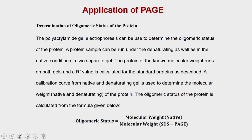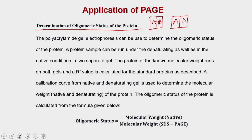The next application is determining the oligomeric status of a protein — how many monomers or subunits are present. For example, a protein with two subunits A and B is a heterodimer, while AA is a homodimer. You can also have trimers, tetramers, and so on. A classical example of a tetramer is hemoglobin, which has two alpha chains and two beta chains.